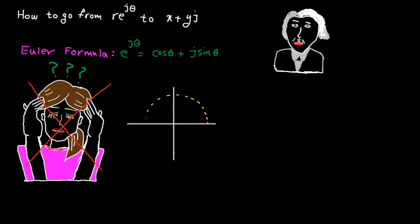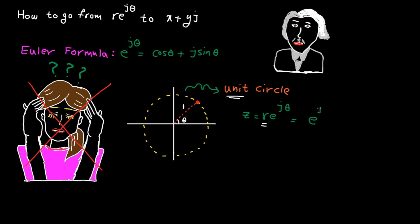To understand Euler's formula, let's consider the unit circle. The distance between this point and the origin is 1 as we are on the unit circle. This angle is theta. So based on the polar representation, the red point on the unit circle is e to the power of j theta as the radius is 1. Now from trigonometry, we know if we draw a line perpendicular to the x axis, this length is equal to cosine theta.